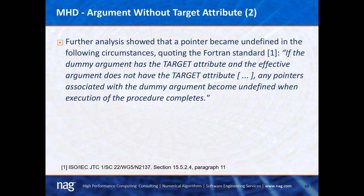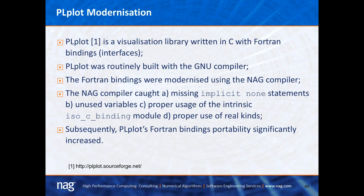The non-conformance comes from the Fortran standard: if the dummy argument has a target attribute and the actual argument does not, any pointers associated with the dummy argument become undefined when execution of the procedure completes. The next case study is the PLplot visualization library written in C with Fortran bindings. PLplot was routinely built with the GNU compiler, and the Fortran bindings were extensively modernized using the NAG compiler. The NAG compiler caught missing IMPLICIT NONE statements, unused variables, enforced proper usage of the ISO_C intrinsic module, and proper use of real kinds. This exercise took around three months, after which PLplot's Fortran bindings portability significantly increased.